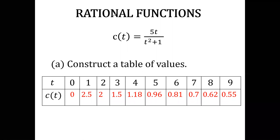Continuing the table: t = 5 gives 0.96, t = 6 gives 0.81, t = 7 gives 0.7, t = 8 gives 0.62, and t = 9 gives 0.55.